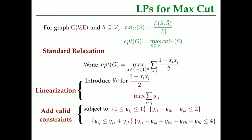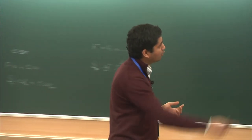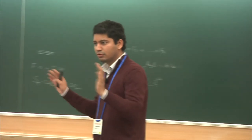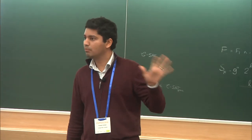I can add any collection of valid constraints — a linear inequality constraint on Y_IJs as long as this constraint holds for all cuts. Any inequality that holds for all cut vectors is a legit constraint to add. One natural way: Y_IJs can take values only between 0 and 1 — I can add these bounding constraints. I can also observe that if I take any triangle of vertices IJK, the max cut can cut at most two edges, because it's an odd cycle. So I can add the odd three-cycle constraint: Y_IJ plus Y_IK plus Y_JK less than or equal to 2. And similarly for five edges, seven edges, and so on.